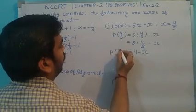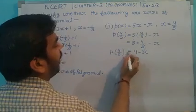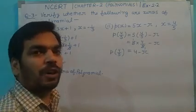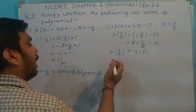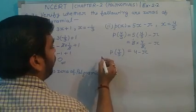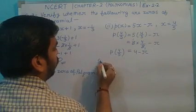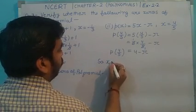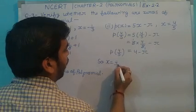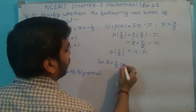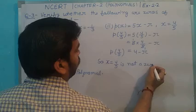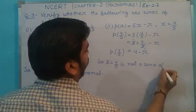p(4/5). The value is not 0. We got the value 4 - π. If it is not 0, then as I previously told you, it will not be a 0 of polynomial. So x = 4/5 is not a 0 of polynomial.